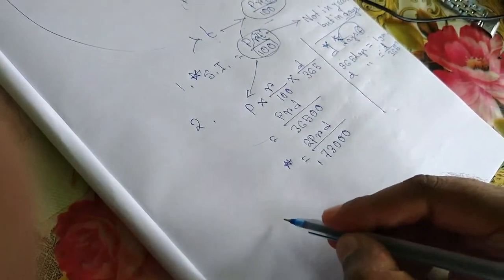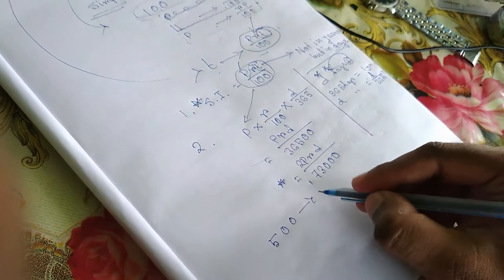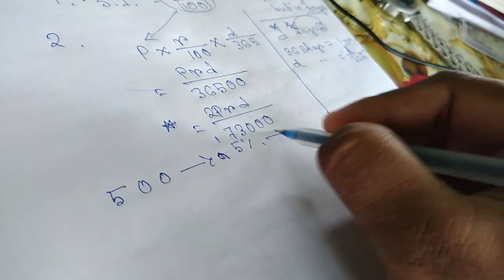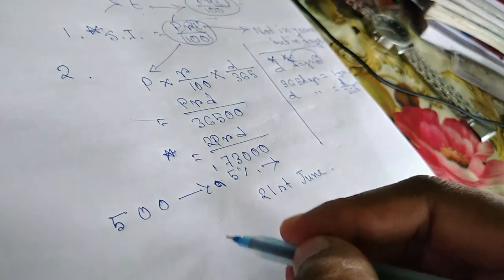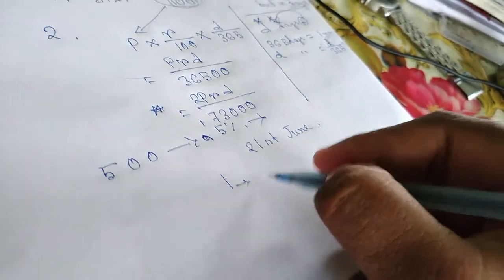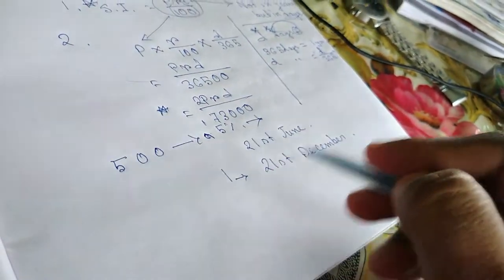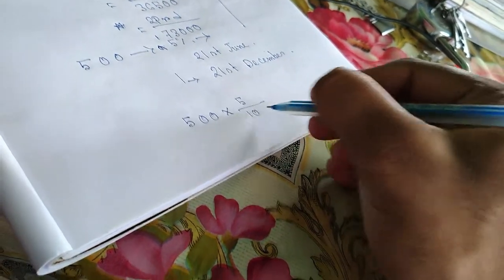When we have to calculate the number of days, for example: 500 rupees is given as loan at 5% interest on 21st June, and B returns the money on 21st December. Now we have to calculate how much interest B has to pay. From the formula: 500 into 5 by 100.